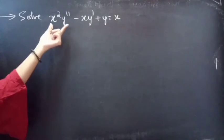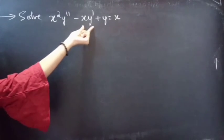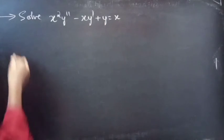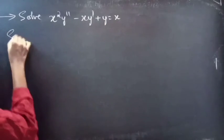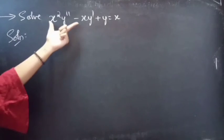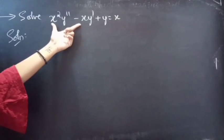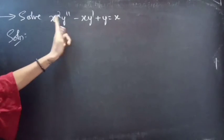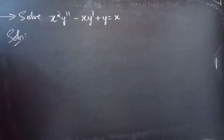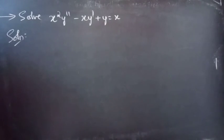Problem: Solve x squared y double dash minus x y dash plus y equals to x. Solution: We are given a differential equation with variable coefficients, and we will reduce this to a linear differential equation with constant coefficients.